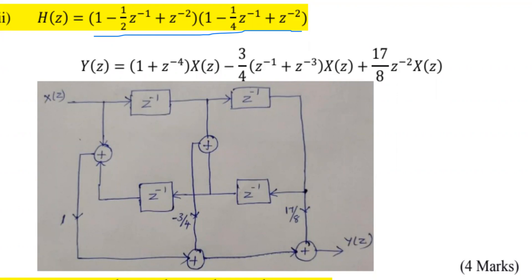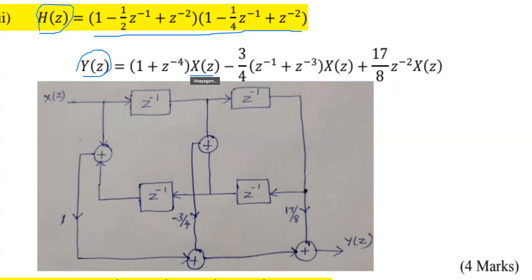We have to multiply and simplify the equation. Then we rewrite H of Z equal to Y of Z divided by X of Z. Therefore we can have Y of Z alone on one side, and X of Z we can send to the right hand side, and we can have structures like this.